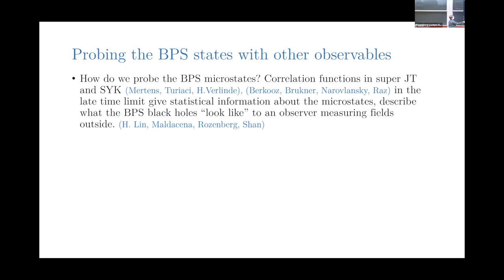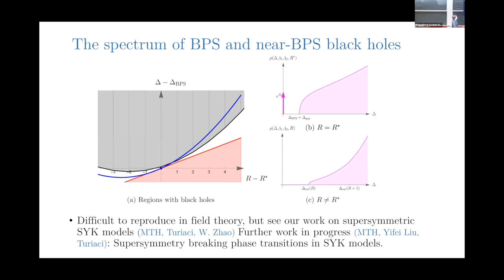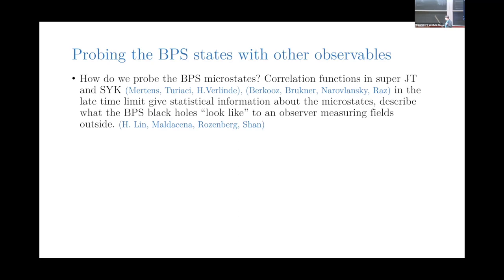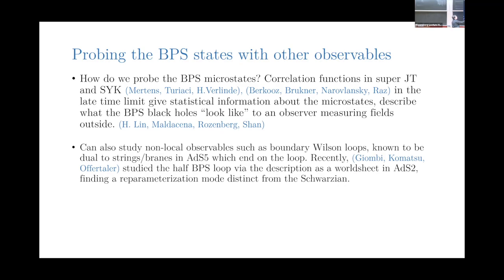In the second half of the talk, we'd like to go beyond counting. Basically there are several different ways to count the BPS microstates — they agree in field theory and they agree in various limits of gravity, if you allow these somewhat unusual complex saddles. We'd like to do more than just count the black holes. In the near-extremal limit, you can use correlation functions in super-JT gravity or SYK to study what these microstates look like, since there's a separation in the spectrum between the BPS states and the non-BPS continuum. If we go to long enough times or low enough energies, various observables will only be sensitive to these kinds of supersymmetric black holes.